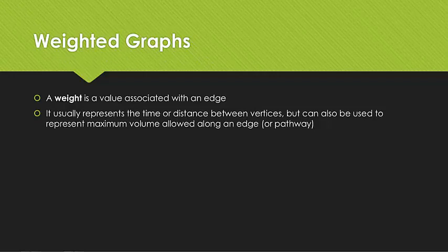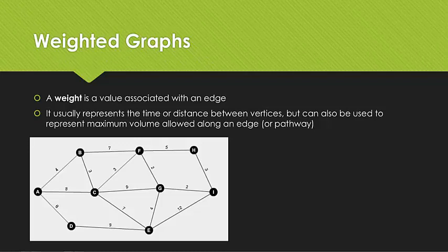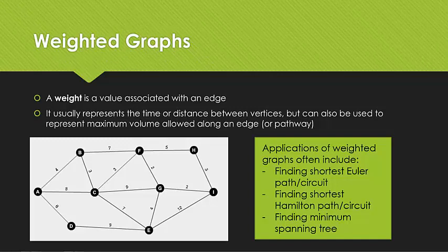Next application we're looking at weighted graphs. A weight is basically just a value that's associated with an edge. Normally a weight would represent the distance between the vertices, or the time it takes to travel between one to the other, or the number of objects that can actually flow along an edge at any given time. We tend to use weighted graphs to help us find the shortest paths and circuits. And a lot of the time that's just trial and error.